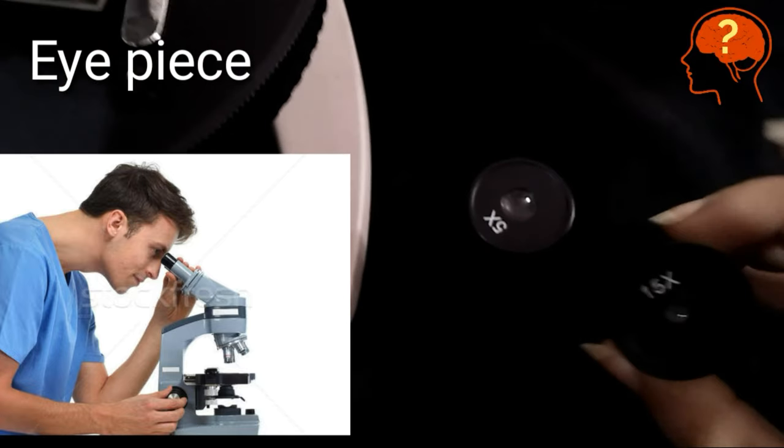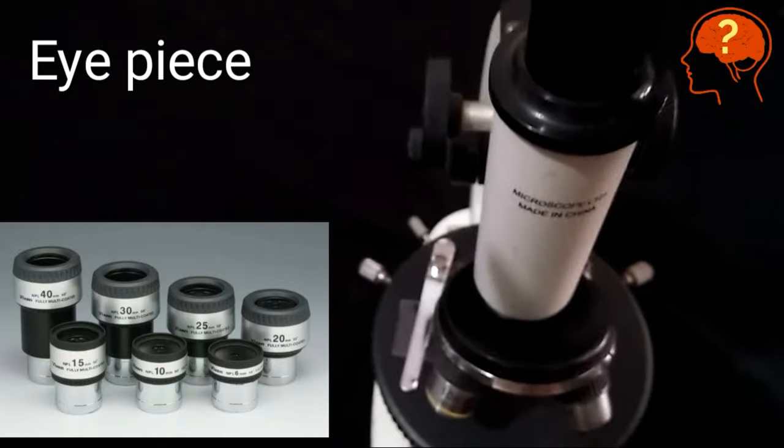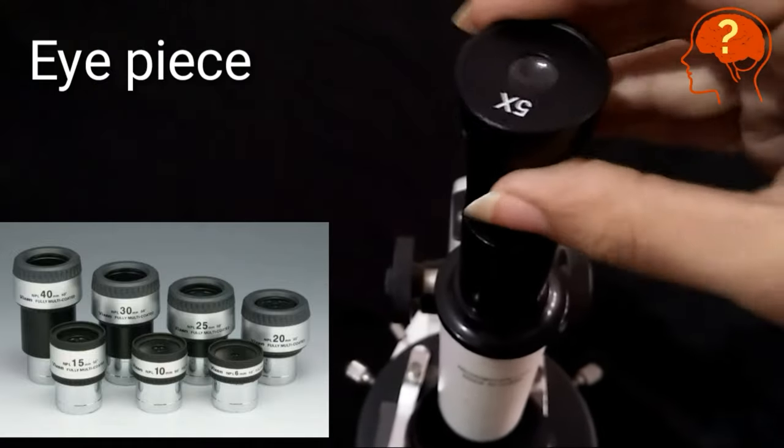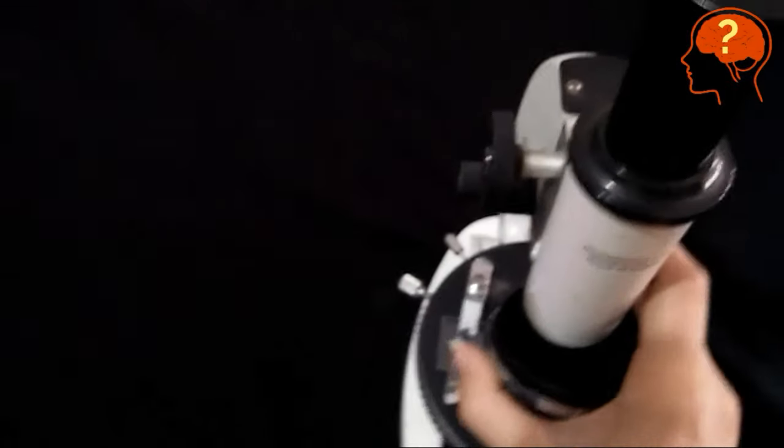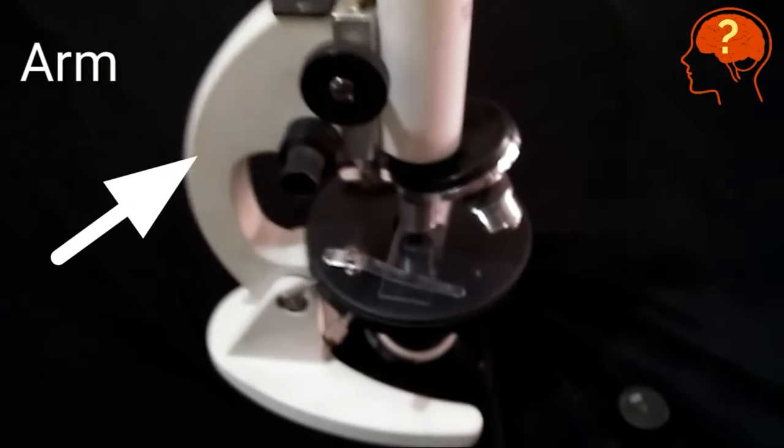They are also present in different magnifications like 5x, 10x, and 15x. This structure is called the arm of the microscope.